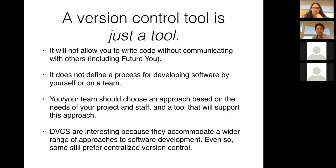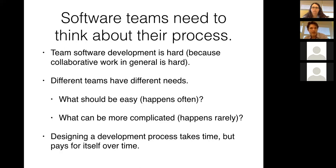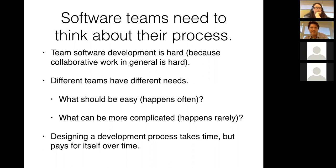Distributed version control systems are interesting because they can accommodate a very wide range of approaches to software development, but for some teams centralized version control will still be more attractive. You need to think about your process on a software team because different teams have different needs. Some things should be easy — things that happen often — and some things can be more complicated. How often you release software, how often you interact with customers — all of these determine what should be easy and hard in your process.